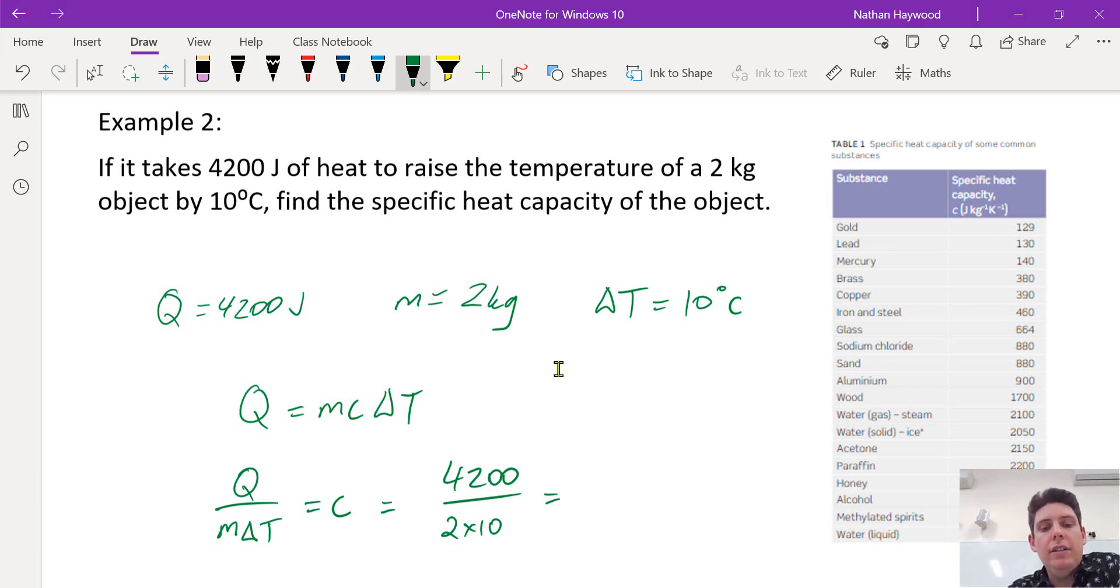And you're left with c. This one's fairly simple. You should be able to do it in your head. So we've got 4200 divided by 20. So we'll lose k0 and then 420 divided by 2 is 210. Don't forget the units j per kilogram c. Or you can write it as j, k to the negative one, c to the negative one.